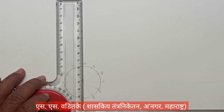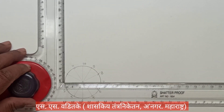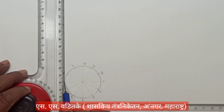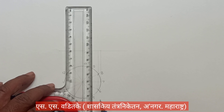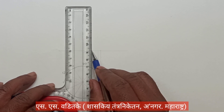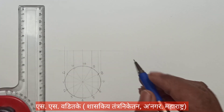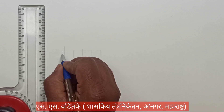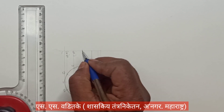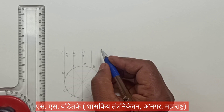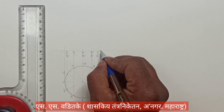Now we have to draw its front view. In the front view, a rectangle will appear having the dimension of 50 by 60mm. Project or shift all these base points into the front view and label these points at the bottom base circle in the front view.